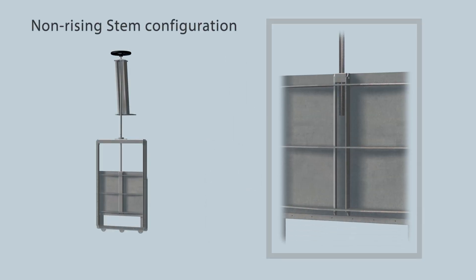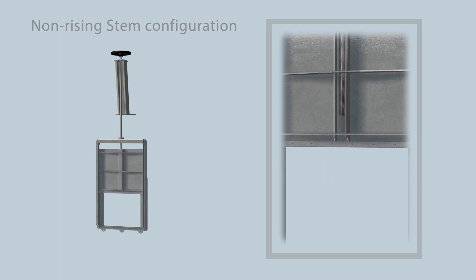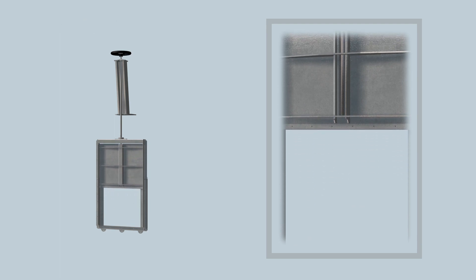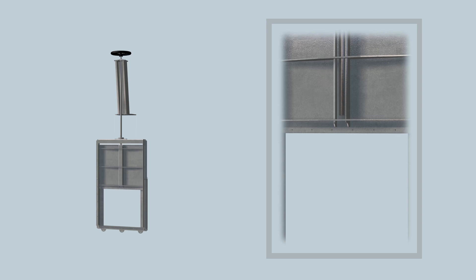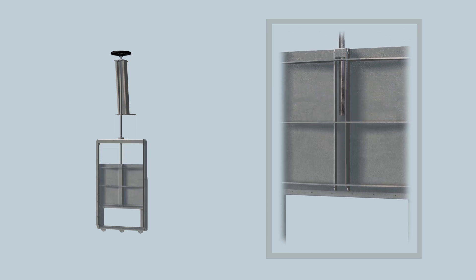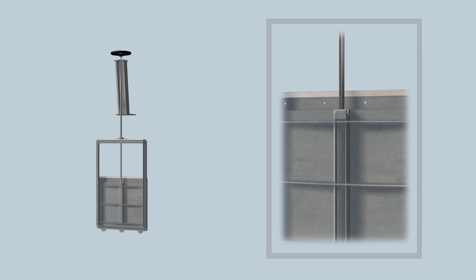The threaded spindle works through the bronze ring nut housed in the plate of the sluice gate. Through the rotation of the spindle, the plate is raised or lowered in a linear motion to open or close the sluice gate. The thread of the spindle and the stem nut are in contact with the water.